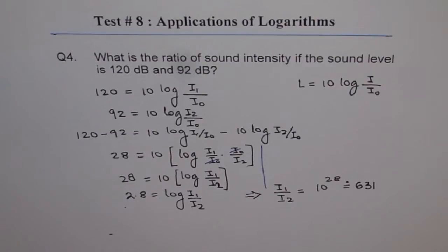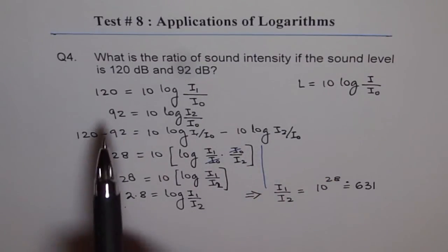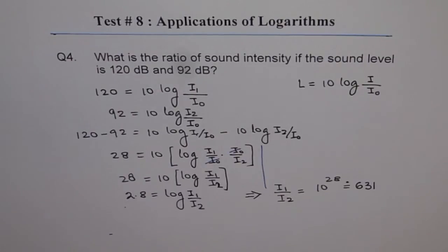So that is the ratio of sound intensity if the sound level is 120 decibels and 92 decibels. Thank you.